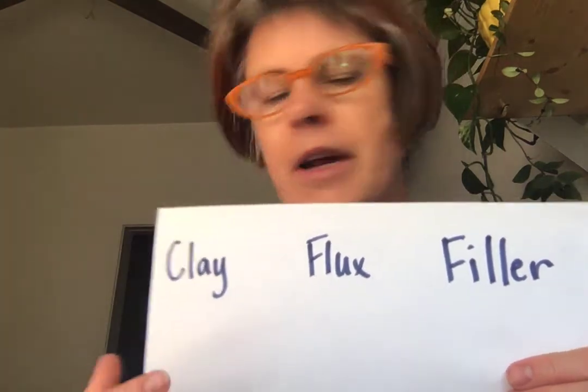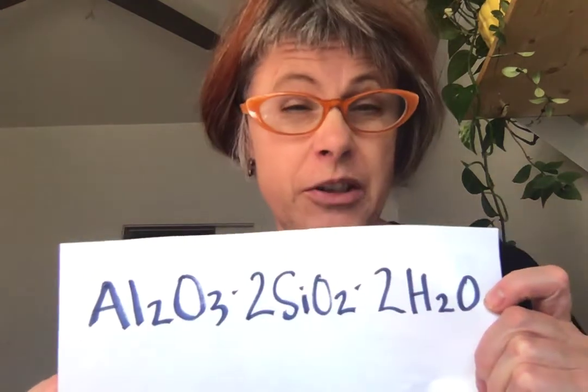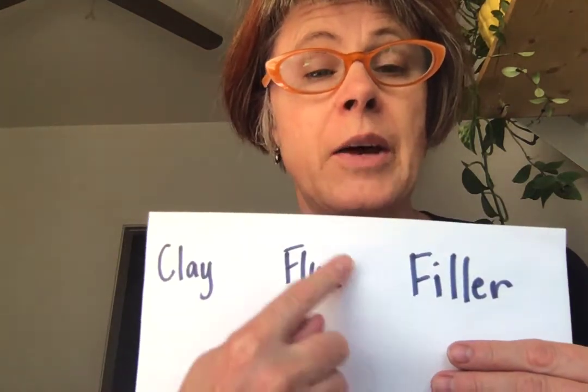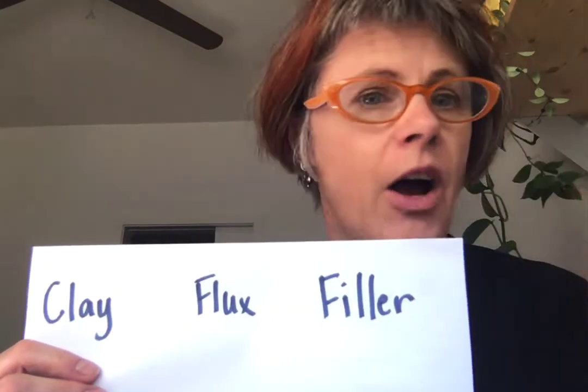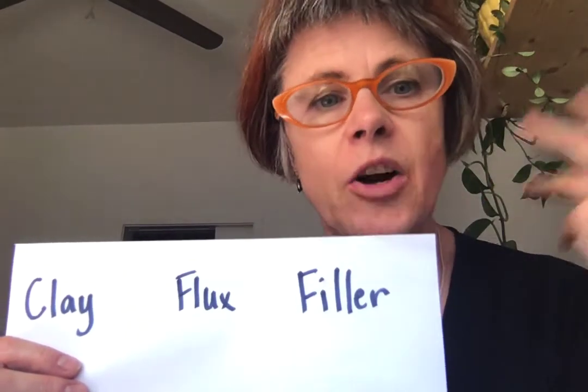In order to make a clay body what you desire, there are three main components: clay, which we'll be talking about in depth; flux, which is the material we put in a clay body to lower its melting temperature and make it usable at the temperature you wish to fire to; and filler, which provides a huge variety of fired and working characteristics that will make your clay desirable for your purposes.